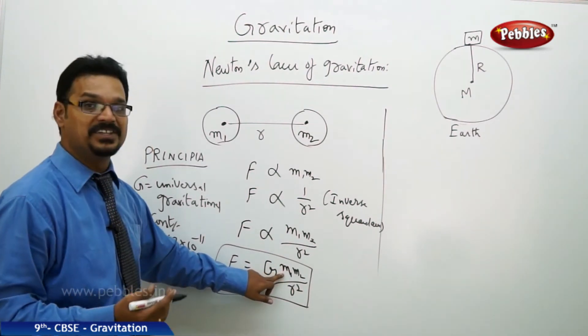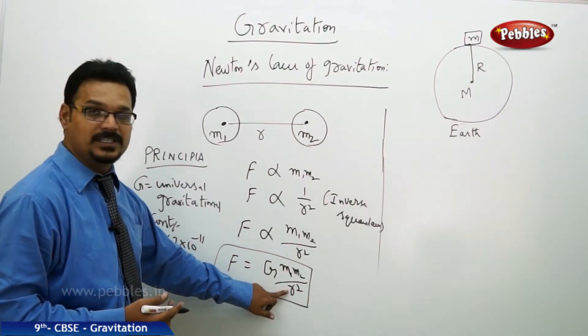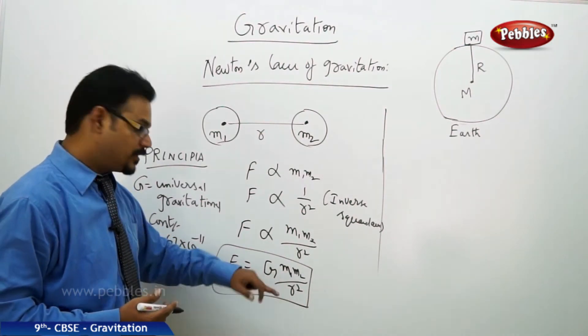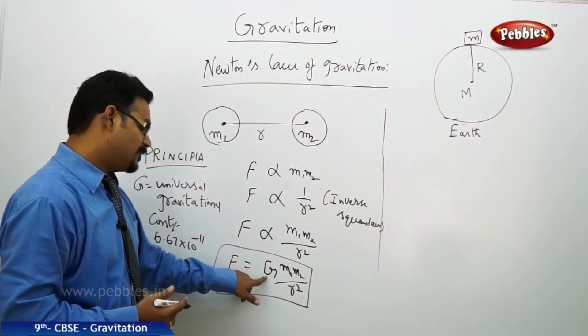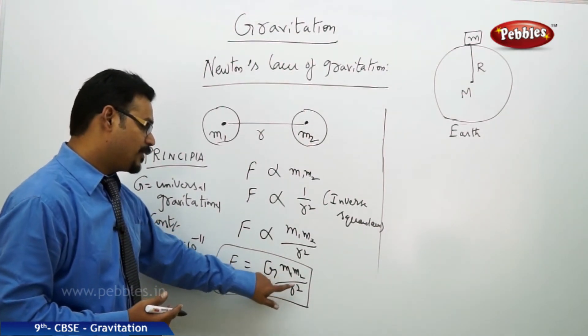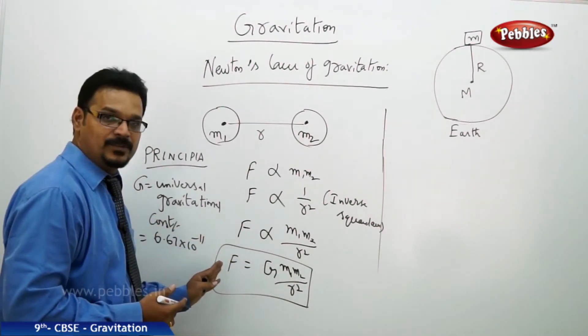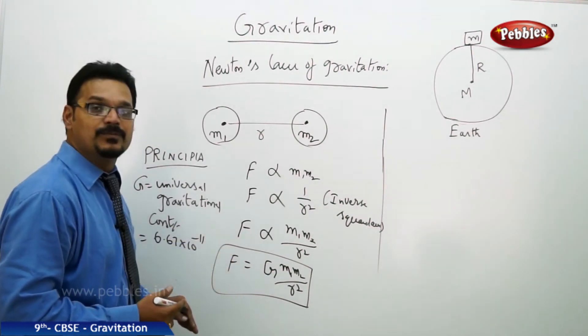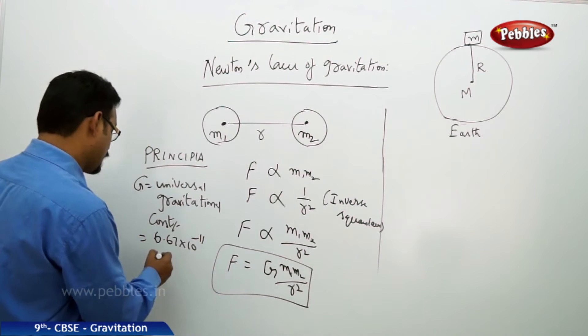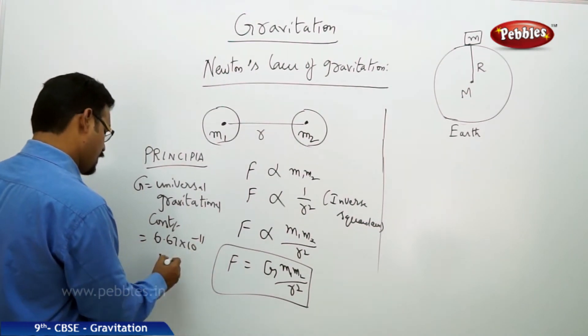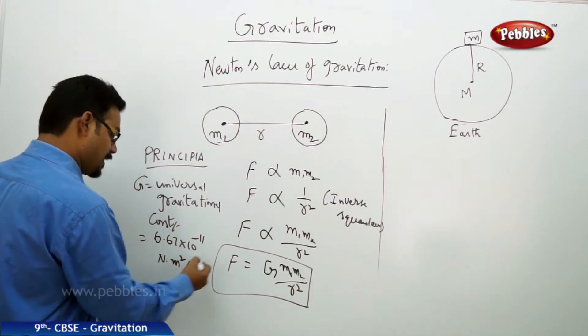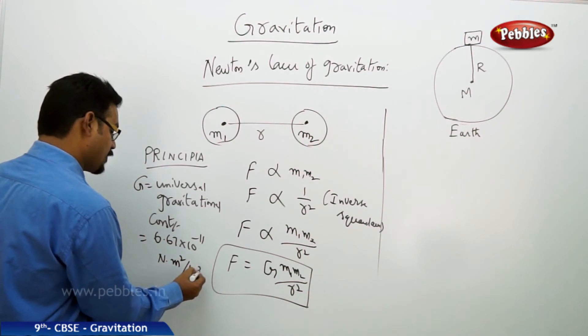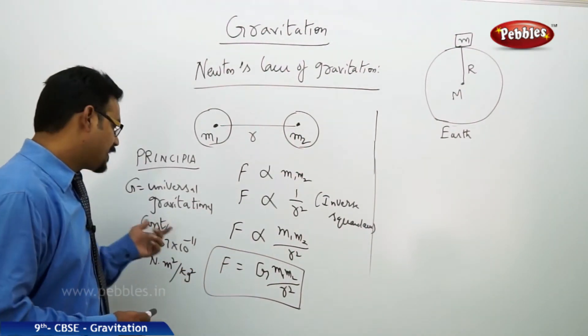Before going to the unit, you should know the unit of force is always Newton, unit of mass is kg, unit of distance is meters. Therefore, if you want the unit of G, take m1 m2 by r square to the left-hand side. It becomes F times r square by m1 m2. So the unit is Newton meter square by kg square - that's the universal gravitational constant.